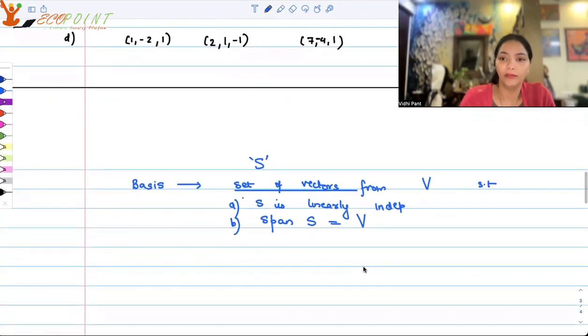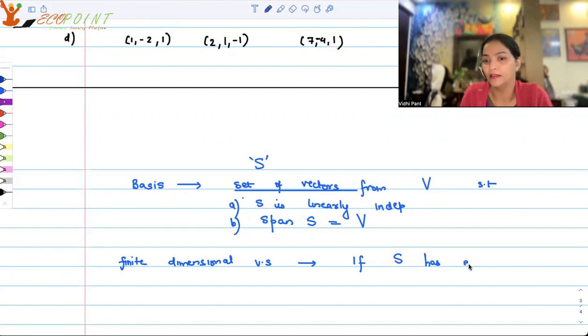Now if you remember from linear algebra, if you have a finite dimensional vector space, either of the two conditions, if one of them is satisfied, the other one will automatically happen. So in case S has exactly the same number of vectors as the dimension of the vector space...